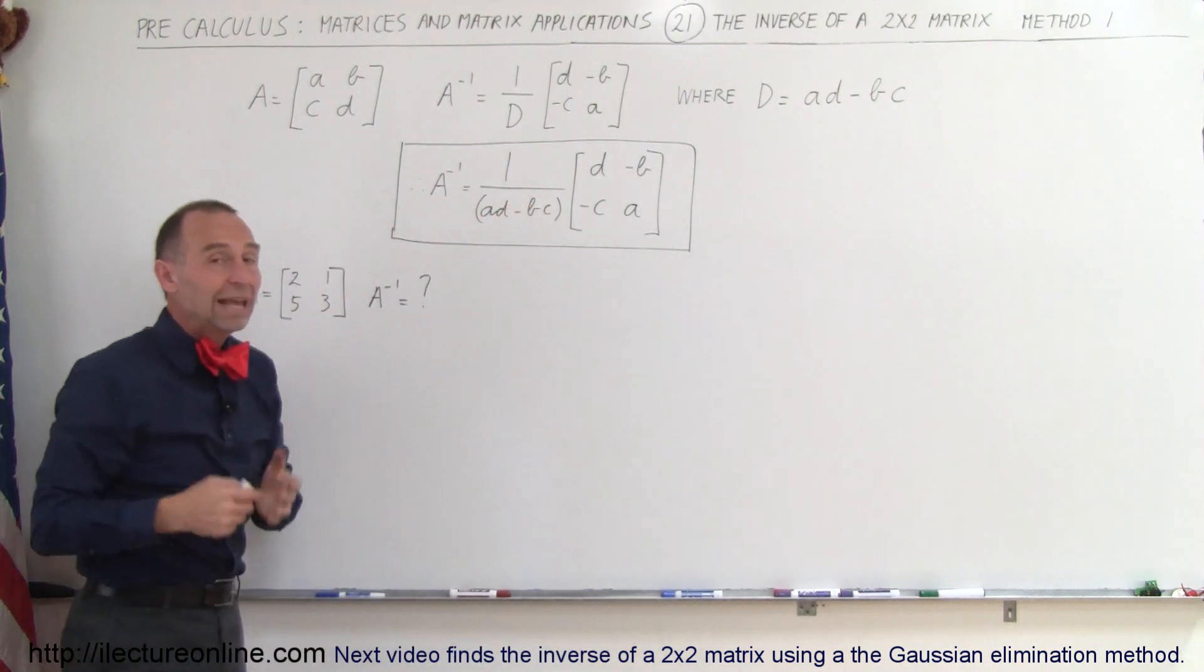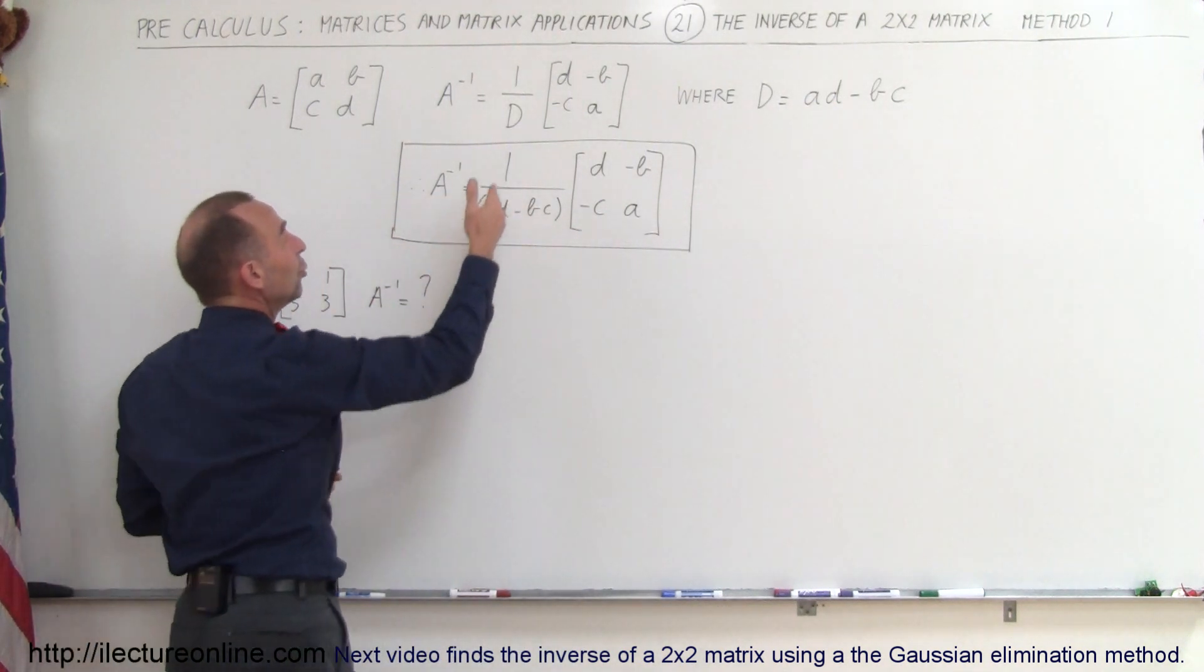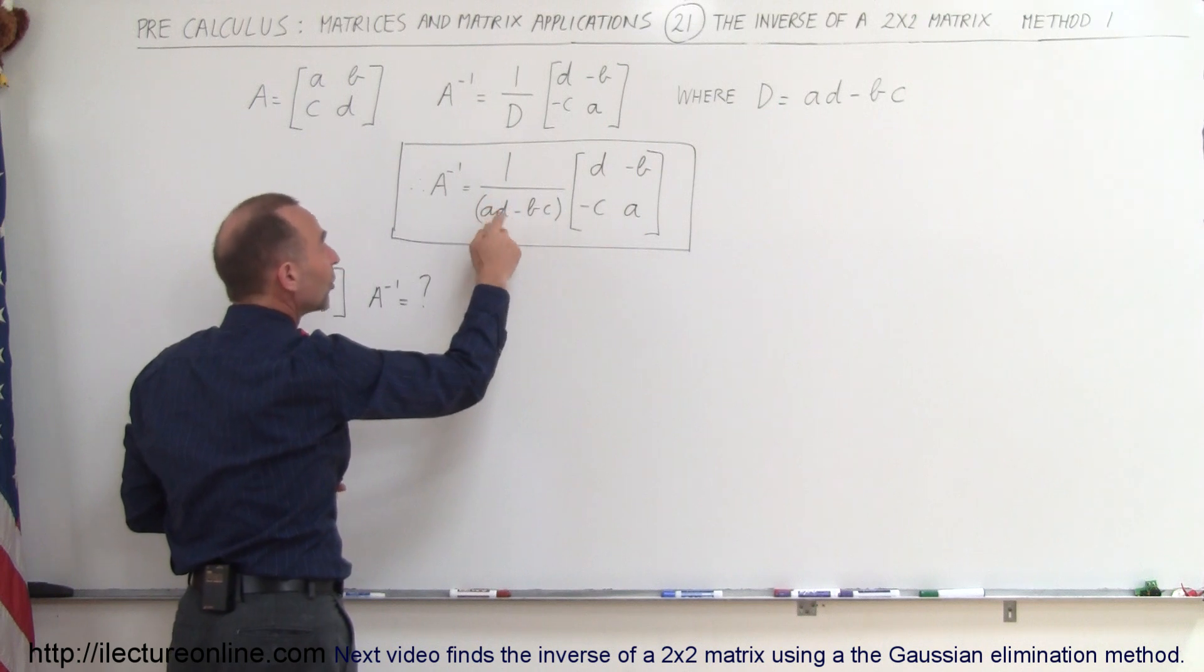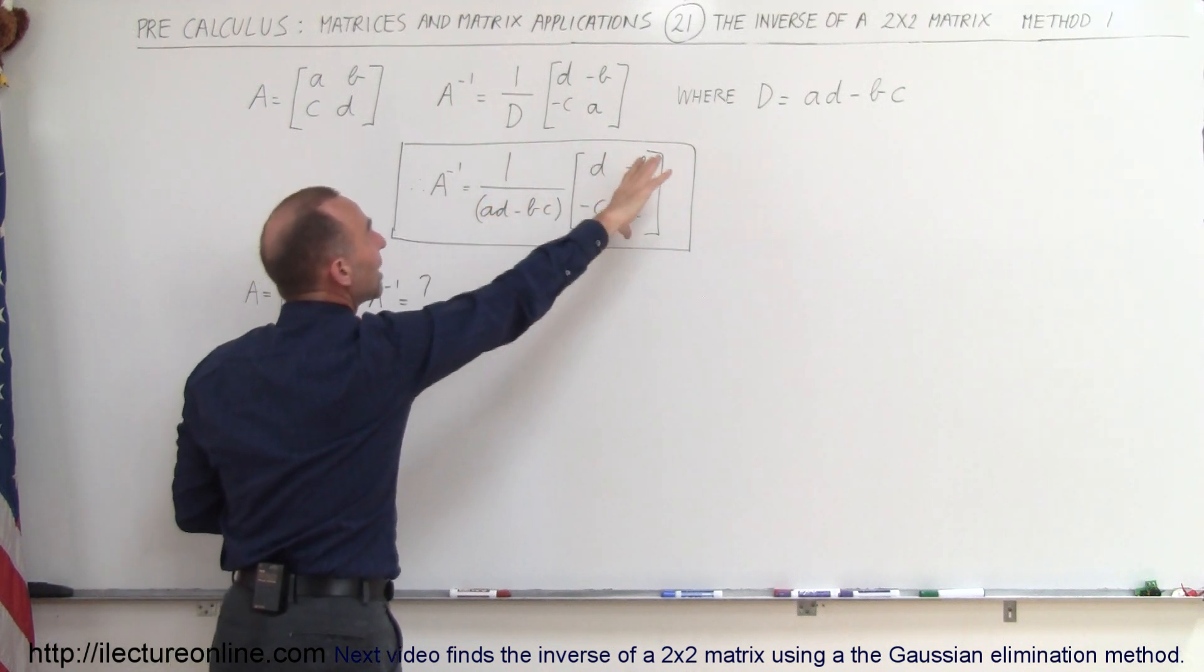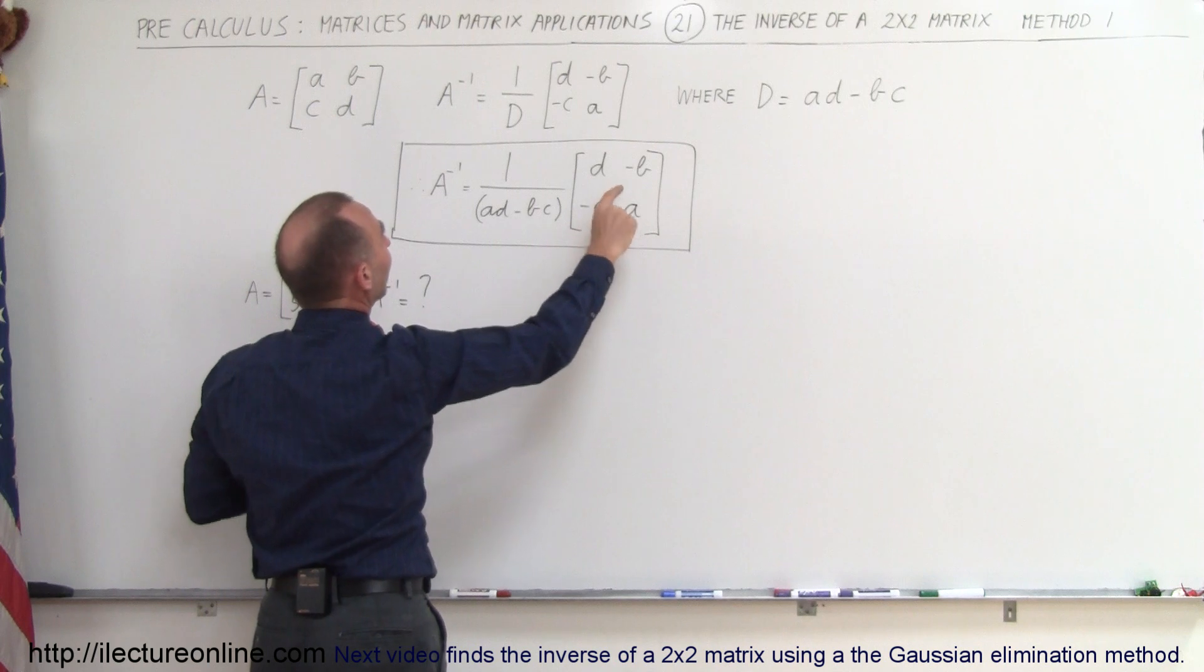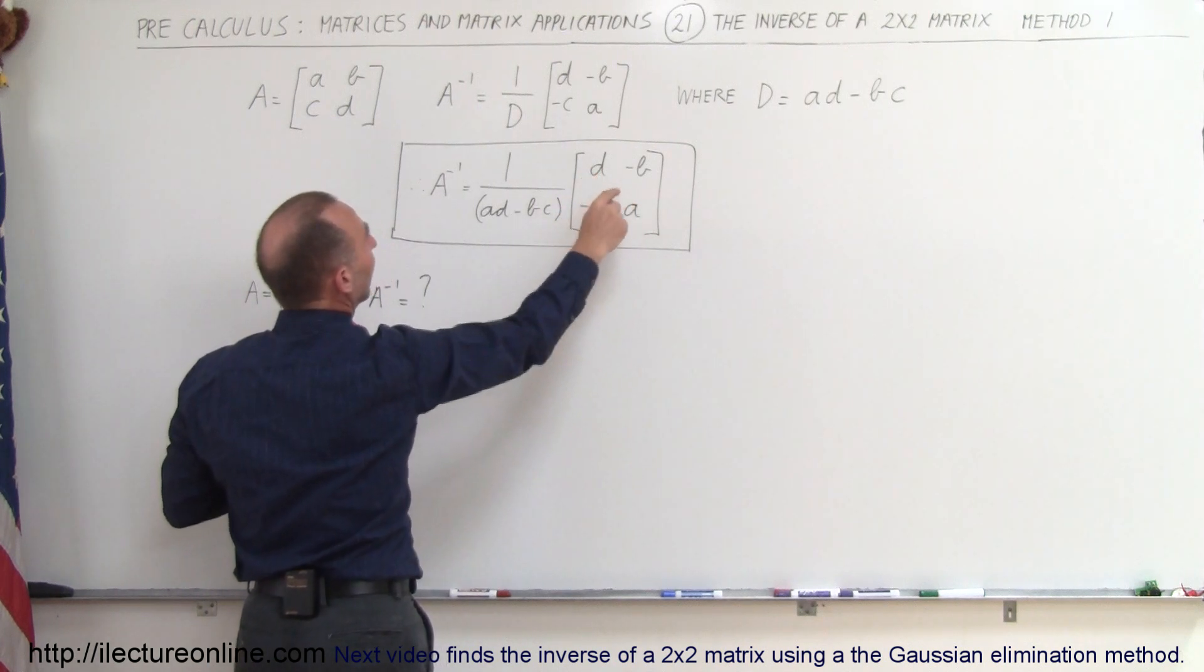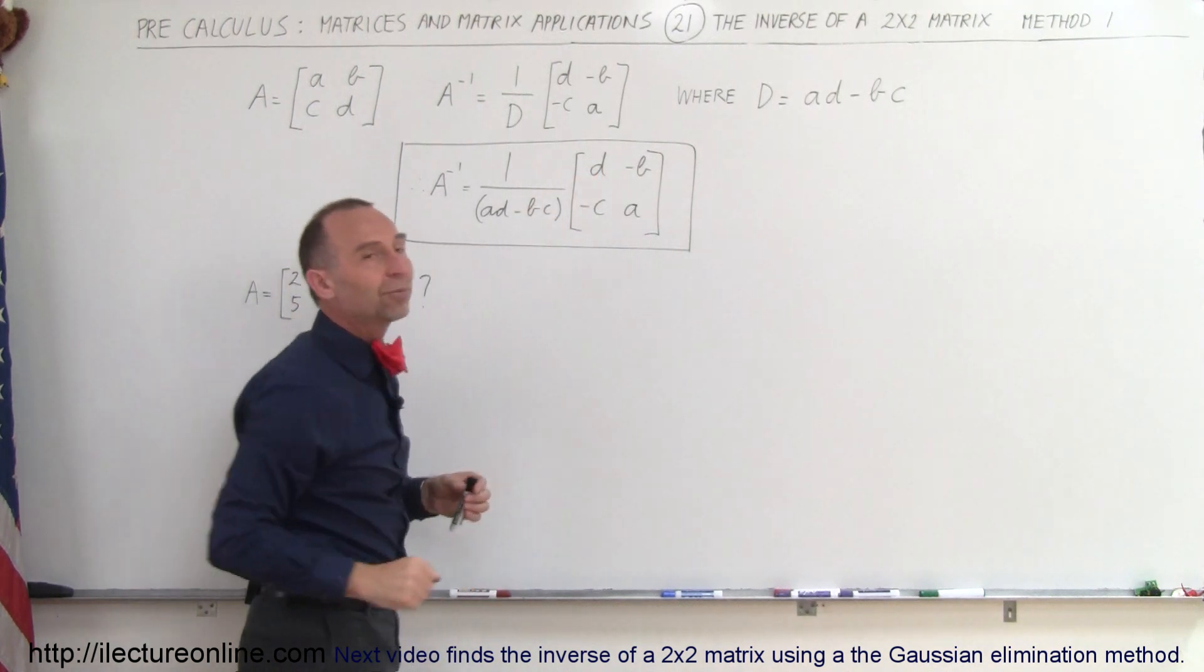And so therefore, the inverse of the matrix is equal to 1 over the determinant, which is ad minus bc, times the matrix. And the matrix then has a and d interchanged, and b and c changed to the opposite sign.